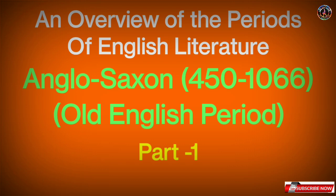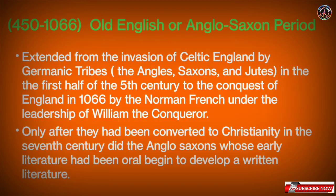Let us understand this period and try to understand its basic features and basic elements. The period between 450 and 1066 is called the Old English period or Anglo-Saxon period. It extended from the invasion of Celtic England by Germanic tribes — the Angles, Saxons and Jutes — which occurred in the first half of the 5th century.